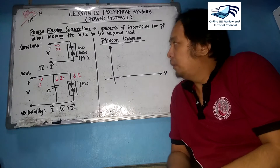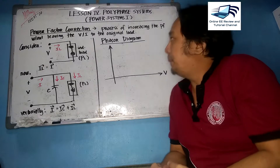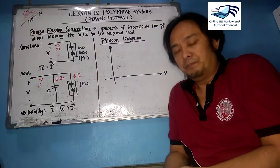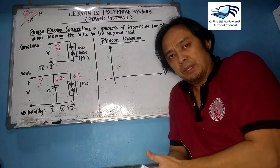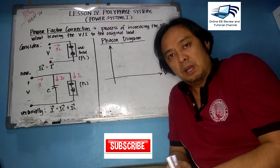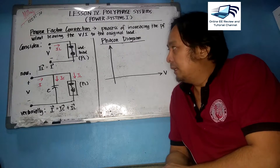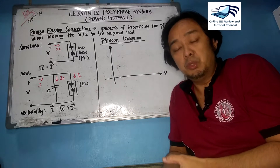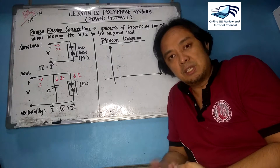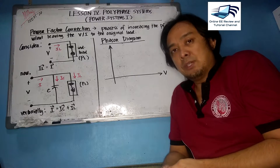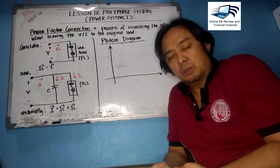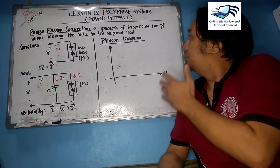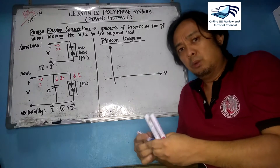Good day to all of you. We are here on our first topic on Lesson 4 on polyphase systems, which is power factor correction. Power factor correction is a process of increasing the power factor.